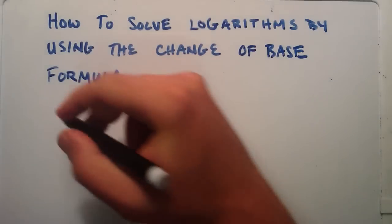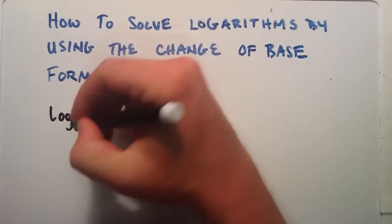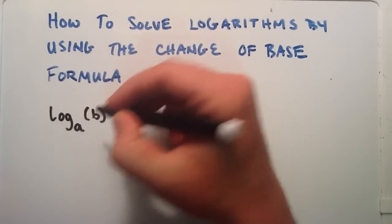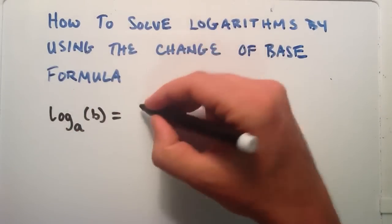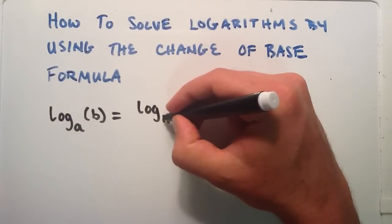So the change of base formula looks like this. If you have a logarithm of base a in argument b, that is equivalent to the logarithm of any base you choose, we're going to call it base n, of b, which was your original argument.